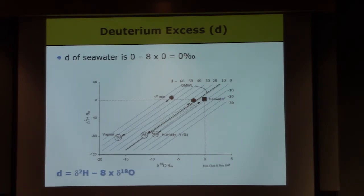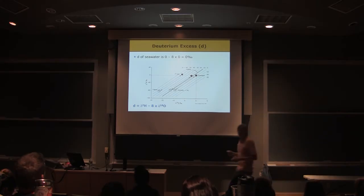So the global meteoric water line is plotted up there, right? And you can see seawater doesn't fall on it. So seawater is the source of the water that's evaporated in the atmosphere, but something is giving the water in the atmosphere a different deuterium excess value than seawater.